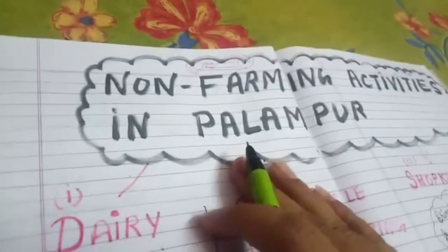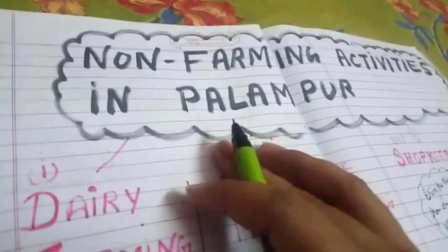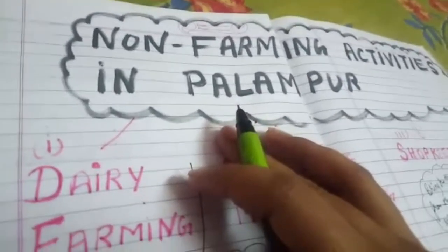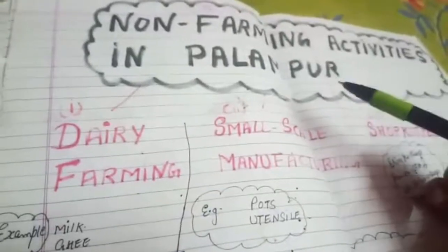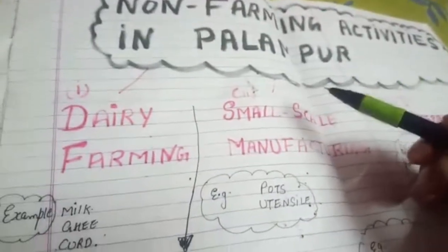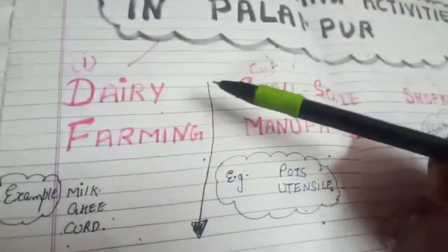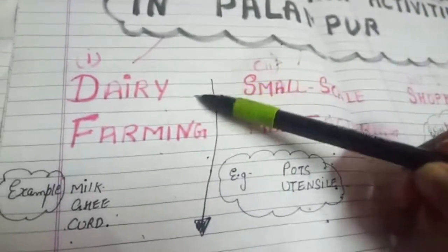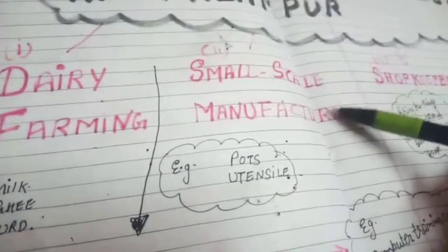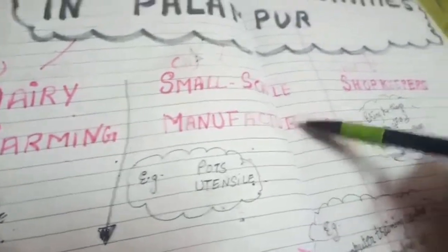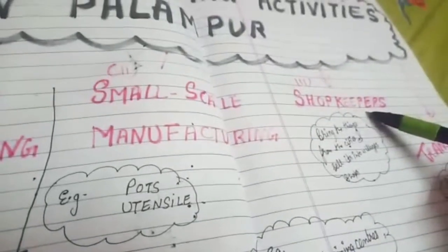The next part is non-farming activity in Palampur. The non-farming activities include: first, dairy farming; second, small scale manufacturing; third, shopkeeping; fourth, transportation; and fifth, self-employment.